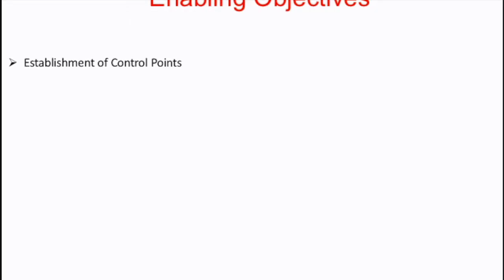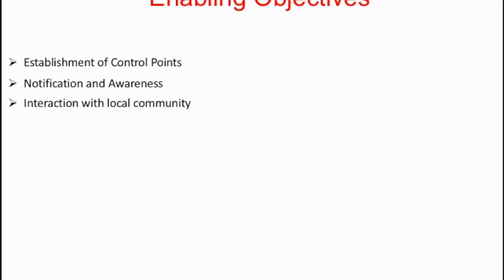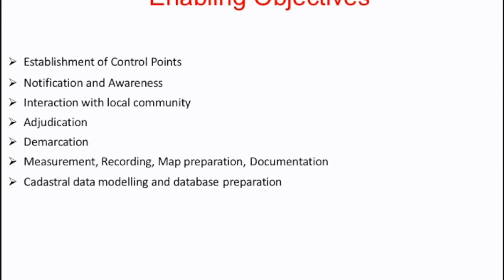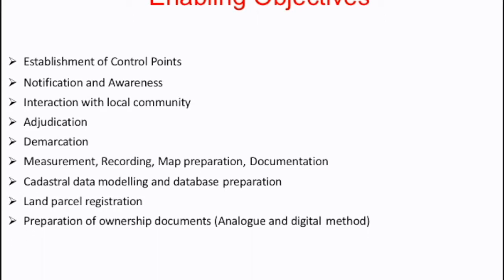In this video we will talk about the establishment of a control point, notification and awareness, interaction with local community, adjudication, demarcation and measurement, recording, map preparation, documentation, data modeling, data progression, and preparation of ownership in two ways: analog and digital methods.